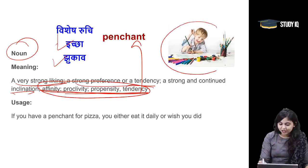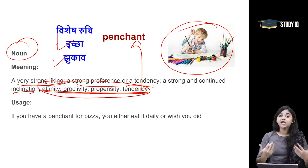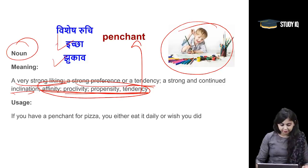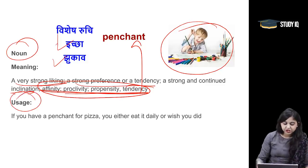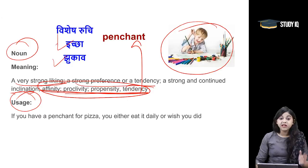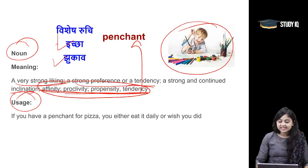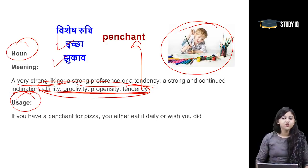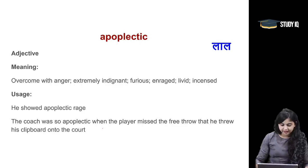As you can see in the image, the boy has a penchant for painting or artistic pursuits. Let's look at the usage. If you have a penchant for pizza, you either eat it daily or wish you did. So penchant means a special inclination or strong liking — for that we use the word penchant.